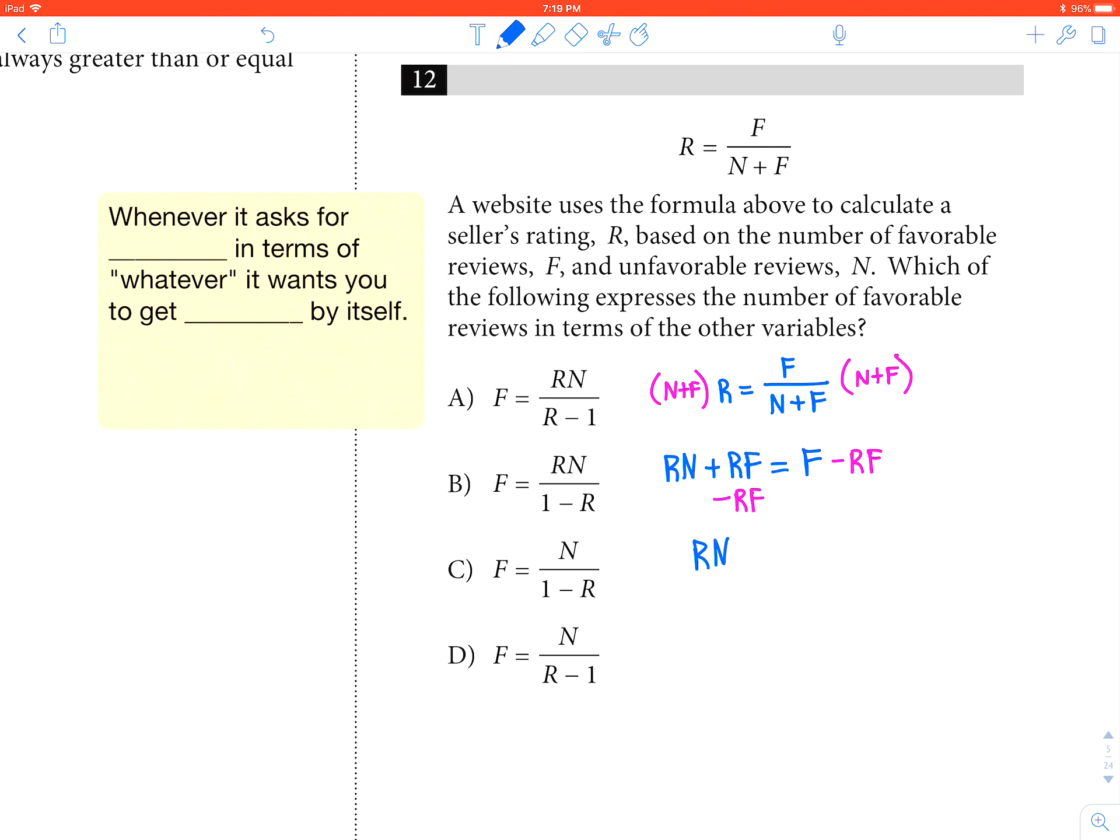It's going to be RN equals F minus RF. And this is where you've got to remember you can factor stuff out. I'm going to factor out the F, 1 minus R.